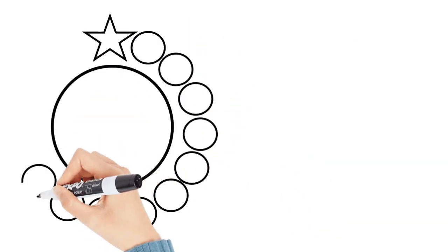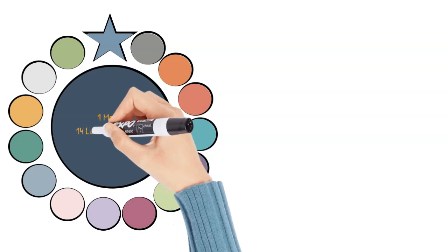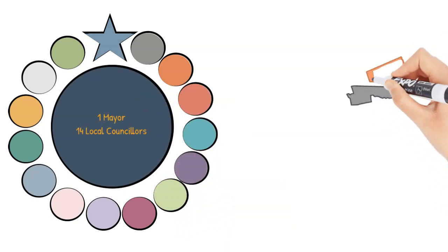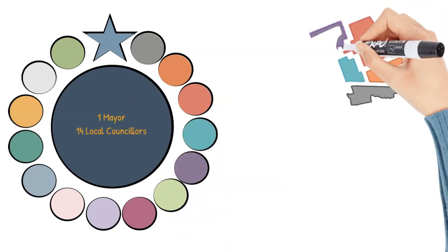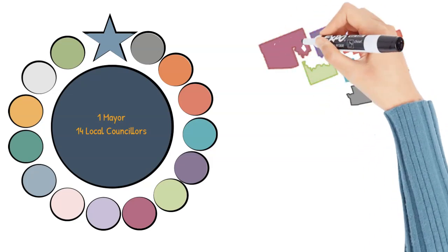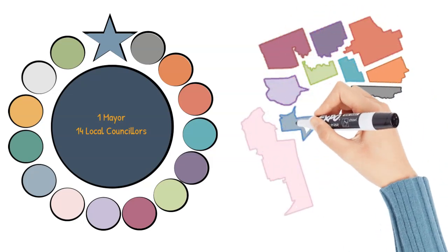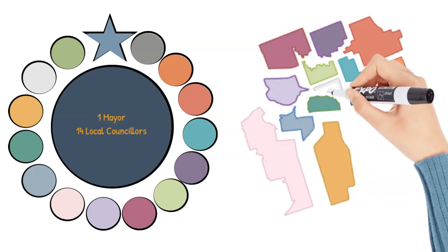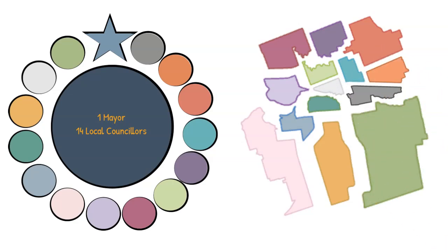Currently, London's council is made up of 15 members. A mayor is elected at large and the city is divided into 14 wards that elect one ward councillor per ward. From these 14 councillors, the mayor appoints one to serve as the deputy mayor.